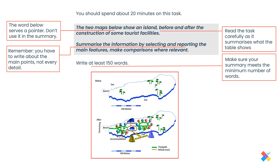In this kind of situation, you are shown two maps, as you can see right now. You are asked to select and report the main features and make comparisons where relevant. You'll obviously use both present and past tenses to describe the maps and the development. We have a map before and after construction of some tourist facilities — the first one is 'before' and the second one is 'after'.